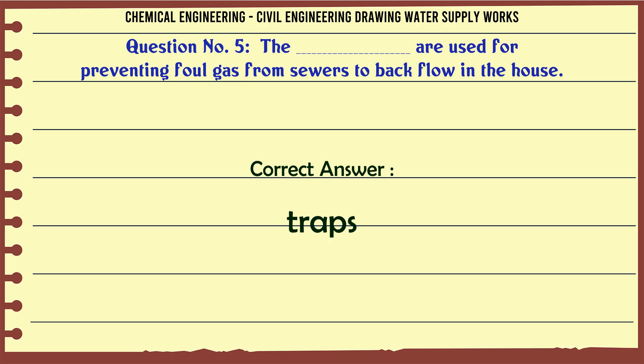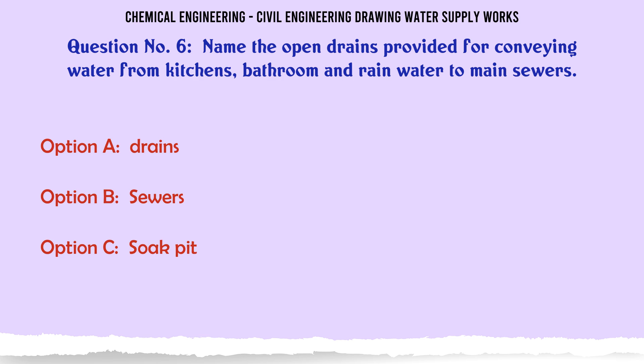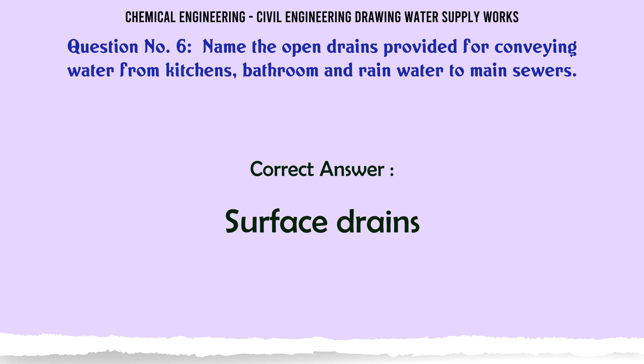Name the open drains provided for conveying water from kitchens, bathrooms, and rainwater to main sewers. A. Drains, B. Sewers, C. Soakpit, D. Surface drains. The correct answer is Surface drains.